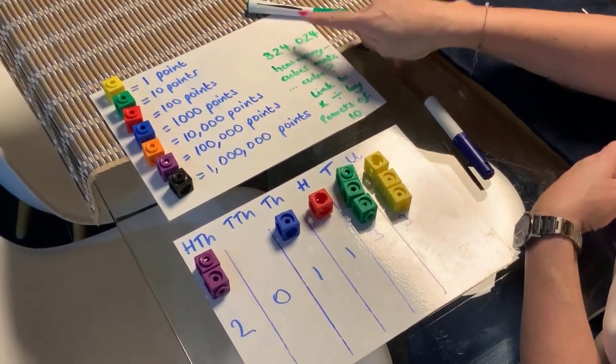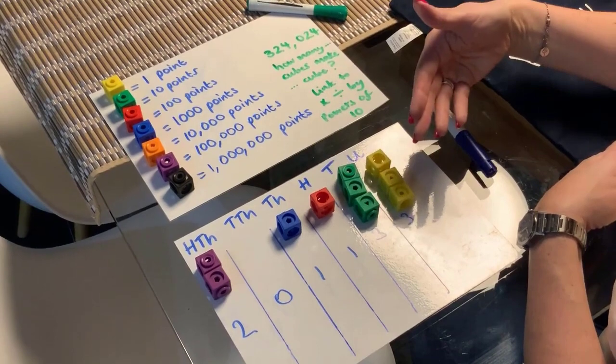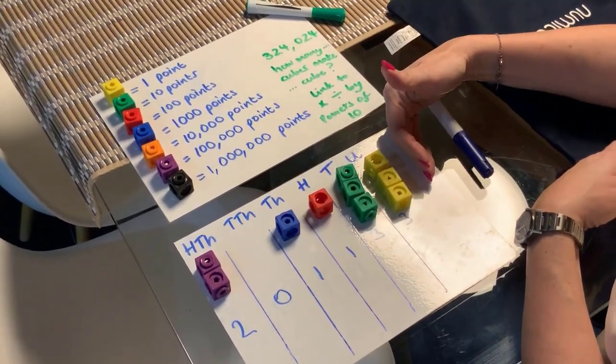So a number like this, three hundred and twenty-four thousand and twenty-four. What cubes would they need to build it? Can they put it on the place value mat here?